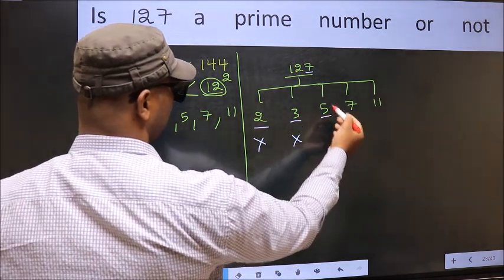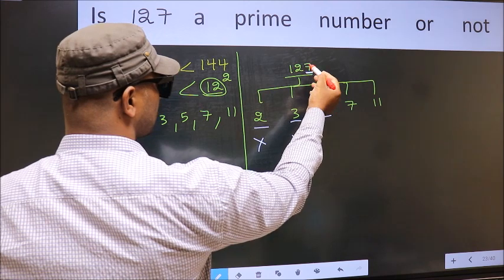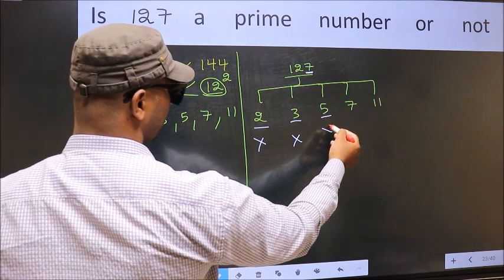Next number 5. Last digit is neither 0 nor 5. So this is not divisible by 5.